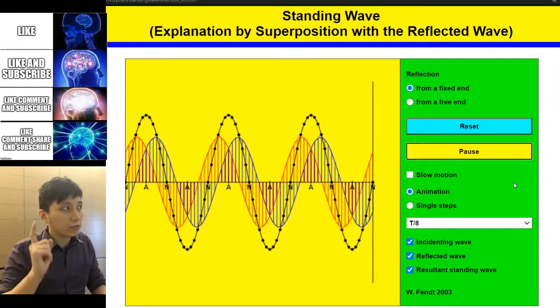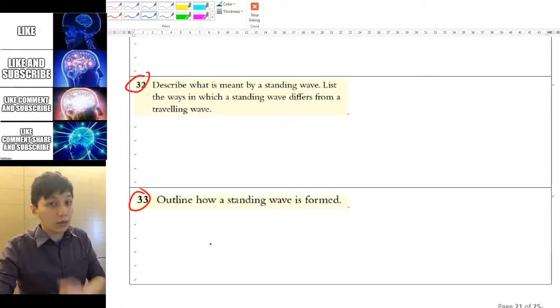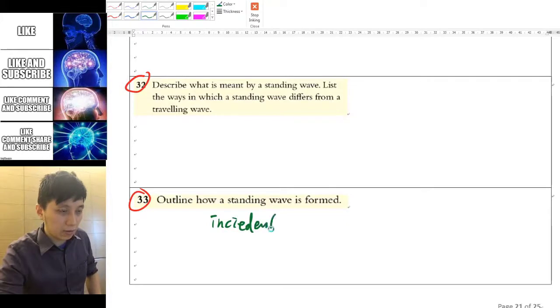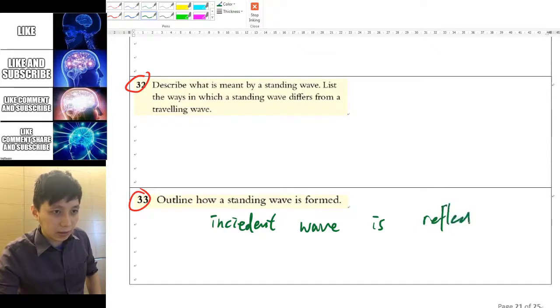But let's try to finish one of the questions on how a standing wave is formed first. Okay, so let's write down some notes for question 33 first. So how a standing wave is formed, according to the simulation just now, is that the incident wave, wave I should say, is reflected at the other end.